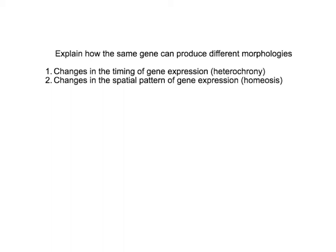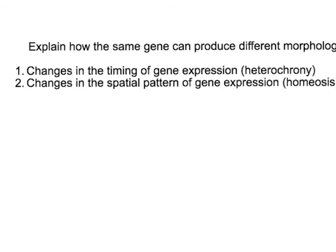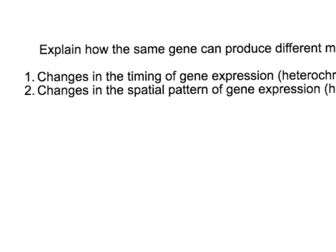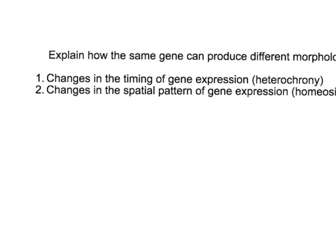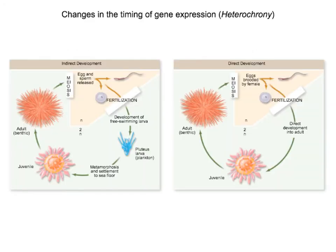Let's start with how the same gene can produce different morphologies. We have two main mechanisms: changes in the timing of gene expression — at what point in time those genes are activated — and changes in the spatial pattern of gene expression. The first case is called heterochrony, which means a change in the timing of expression.